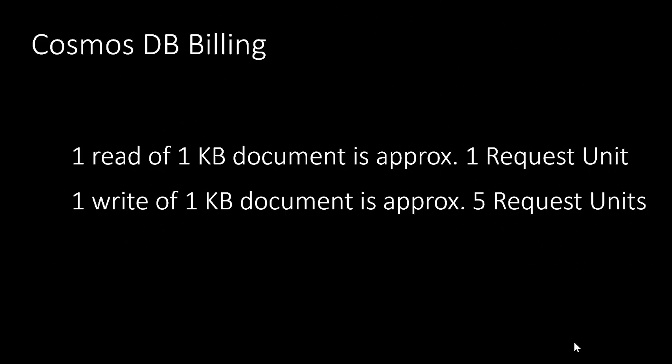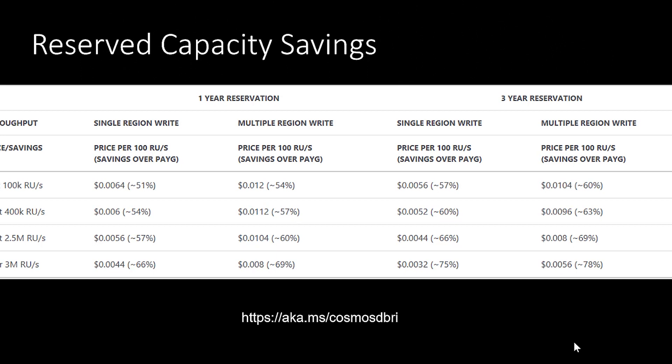This is a very approximate number and may change based on the context of your workloads, your indexing policy, or how you replicate data and your consistency model. Now that we have a good introduction on how billing works, let's jump into how reserve capacity reservations work. Your Cosmos DB bill is extremely flexible, but on our end that flexibility is something we guarantee to you — it is incredibly hard to maintain all those resources for customers to scale up and down their throughput capacity and increase or decrease the number of RUs.